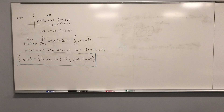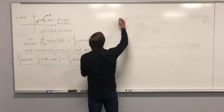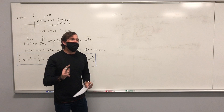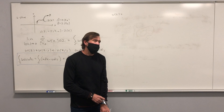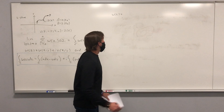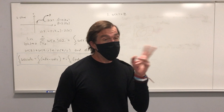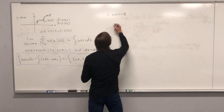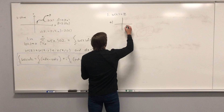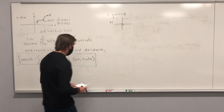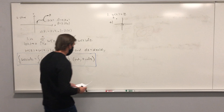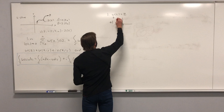Now we can take a few functions and compute their integrals. Let's start with the next simplest function we can imagine. The simplest would be a constant, but let's do the next one: Z. We're going to integrate Z along a contour — actually two contours. Contour number one: we're going to start at the origin and end at the point negative one plus i, and our contour is going to be a straight line.